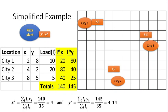Which is, as you can see here, X star, which is the X coordinate of our center of gravity. So it is the sum of this total, which is 140, divided by the sum of the loads, which is those three numbers, 10, 20, and 5, which add up to 35.